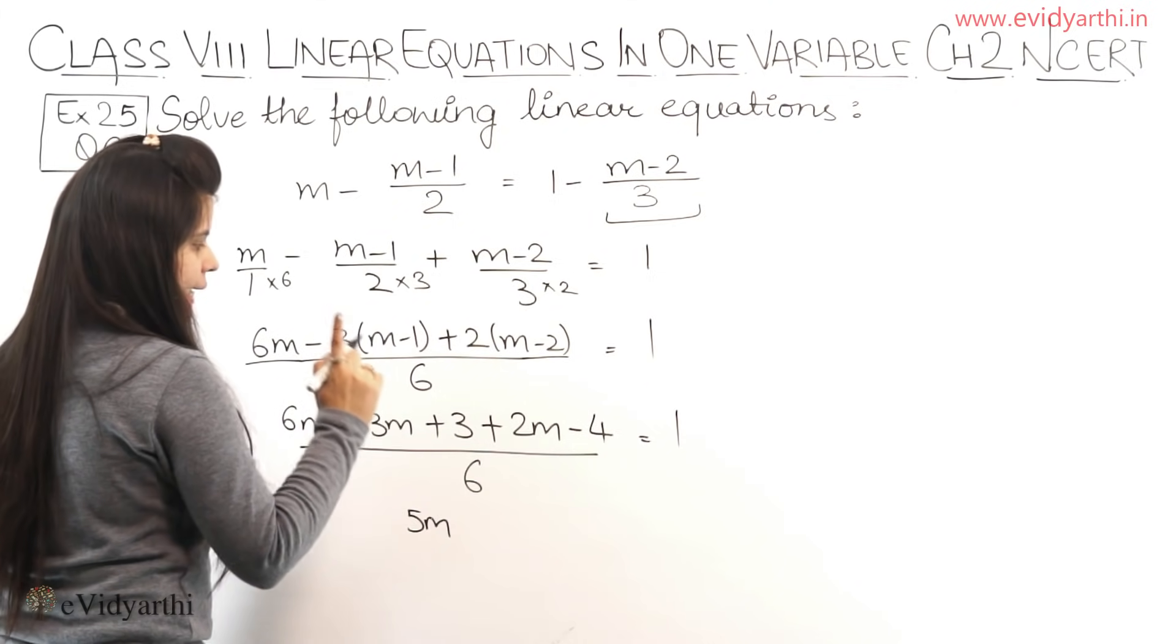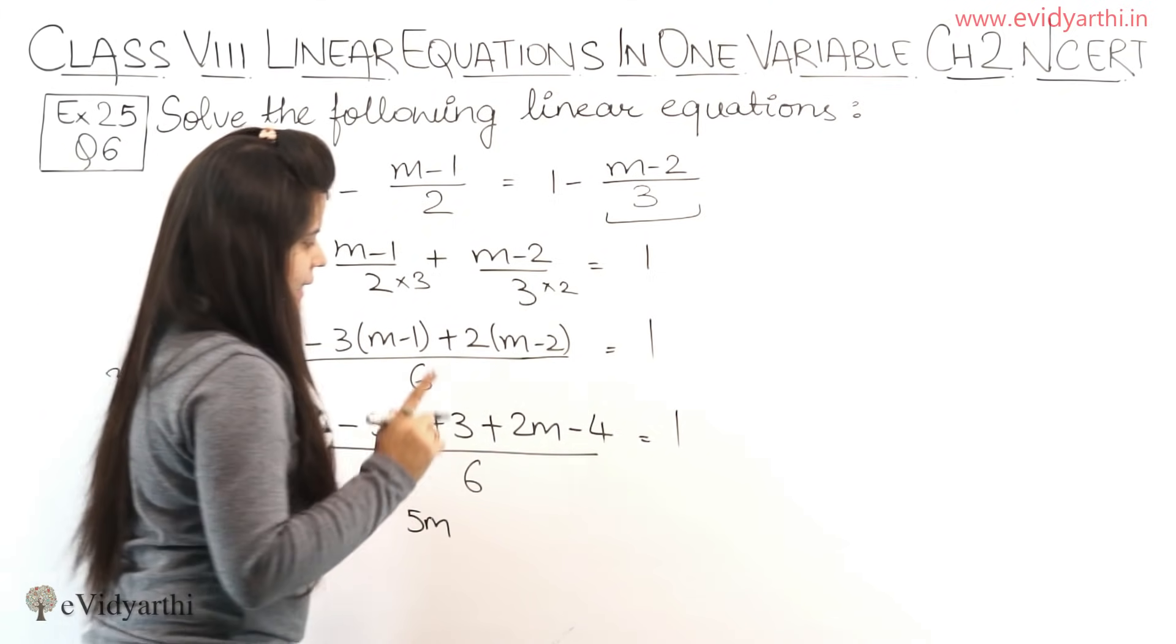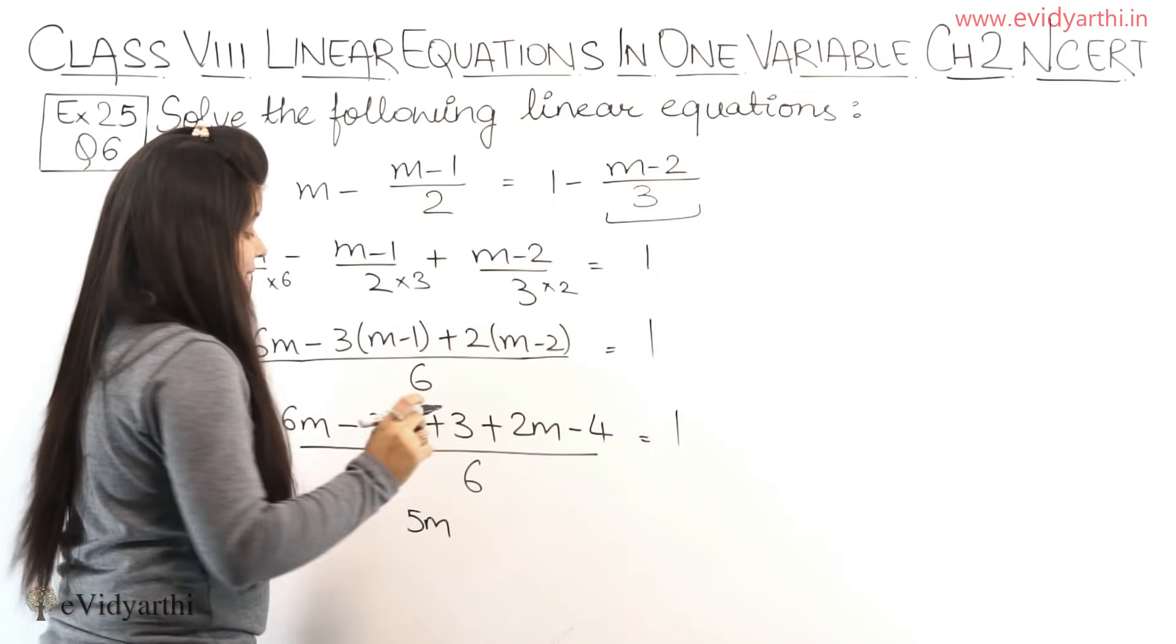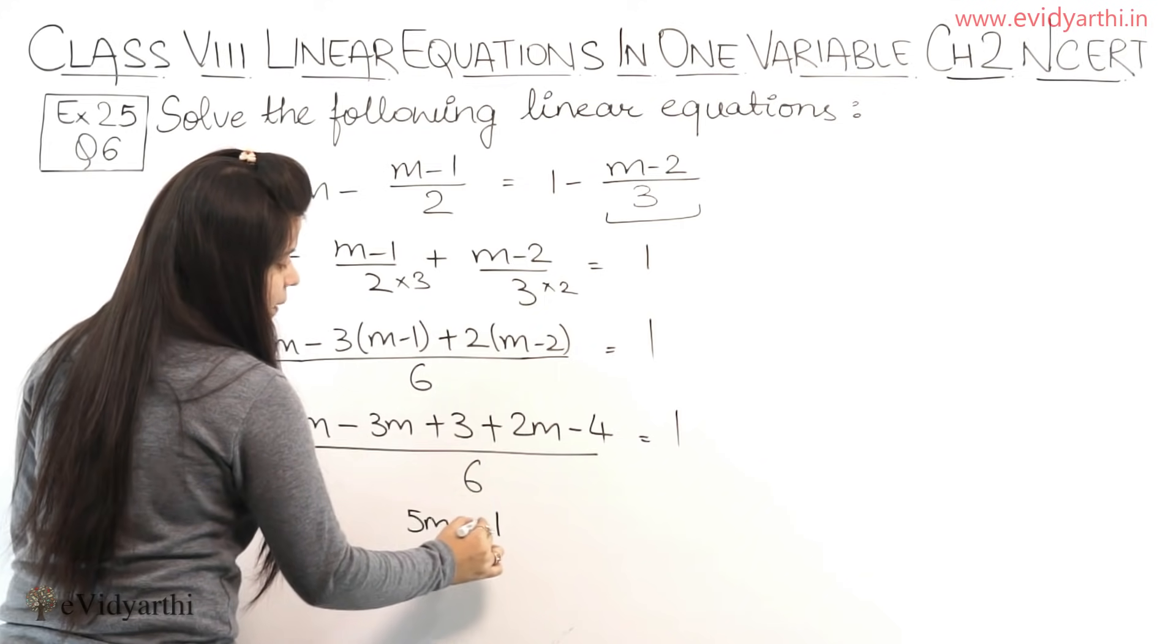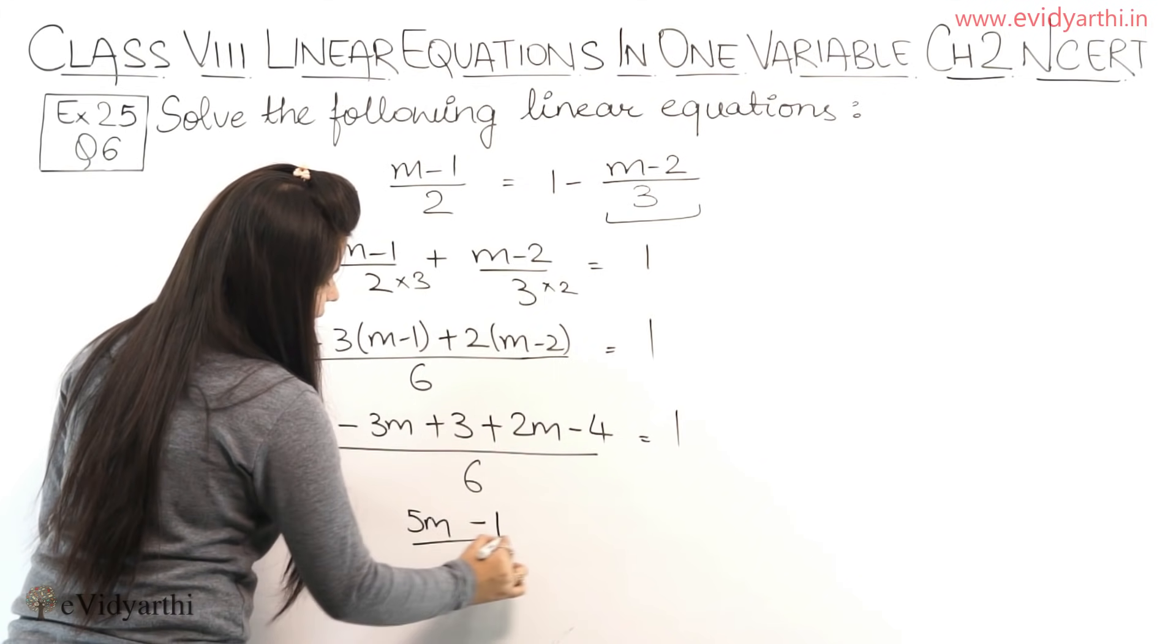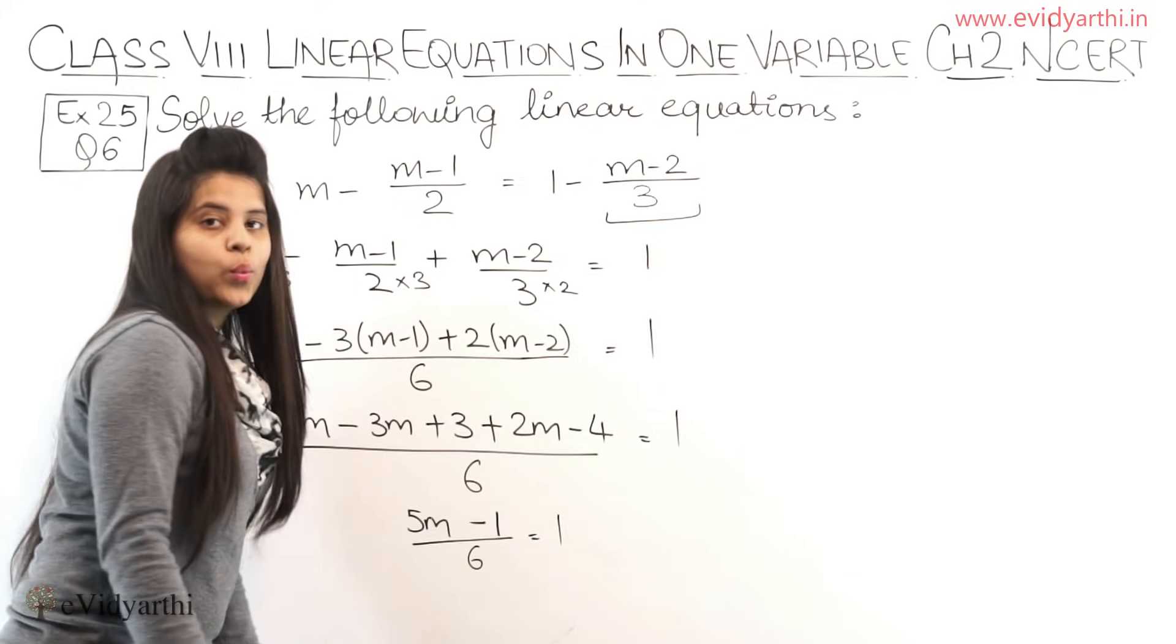And for the numbers here we have plus 3 and minus 4. So plus minus minus, this means 4 minus 3 is 1, but 4 is bigger so the sign will be minus. So (5M - 1)/6 equals to 1.